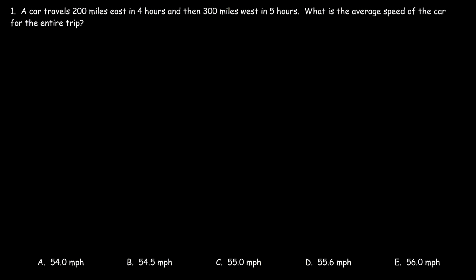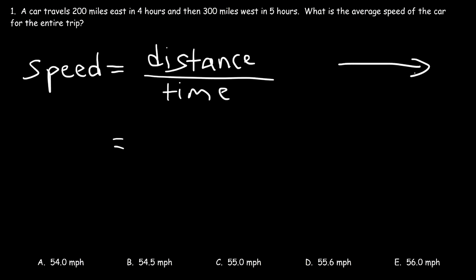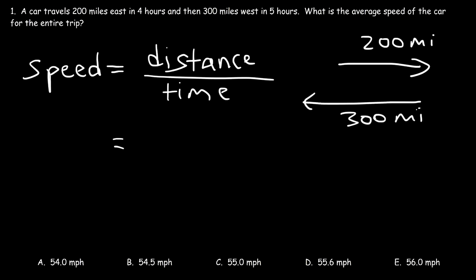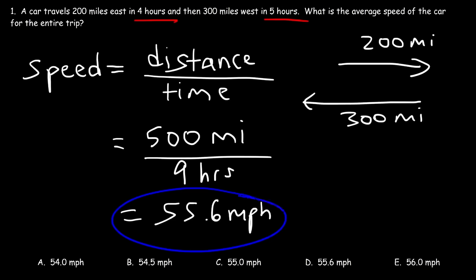Number one: a car travels 200 miles east in four hours and then 300 miles west in five hours. What is the average speed of the car for the entire trip? Average speed is equal to the total distance divided by the total time. The car traveled 200 miles east and then 300 miles west, so it traveled a total distance of 500 miles. The total time is four plus five, which is nine hours. So 500 divided by nine gives an average speed of 55.6 miles per hour, which is answer choice D.